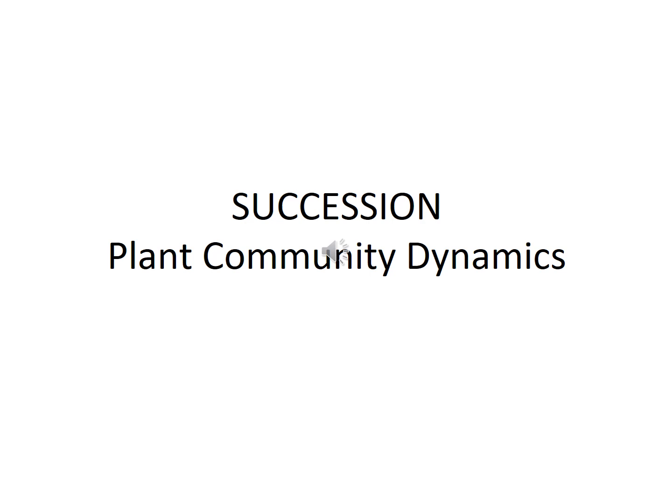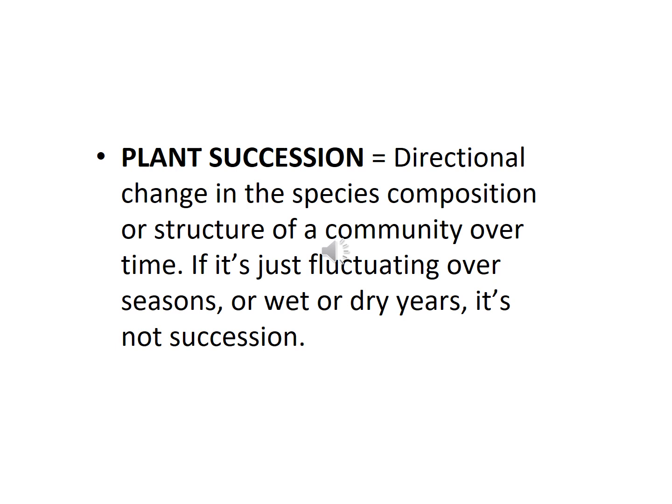We've mostly discussed physical and ecological attributes of communities as seen at any given time. Succession is about how plant communities change over longer periods of time — the successive features of a particular community over time. One group of plants might be prominent at one point, and then in a hundred years some of those plants have died off and others become more prominent. That's ecological succession.